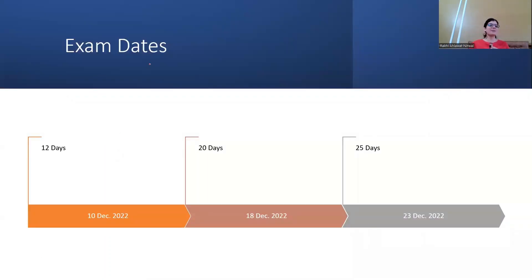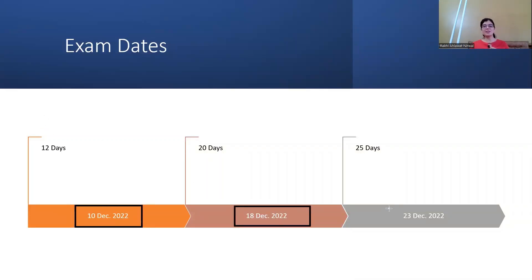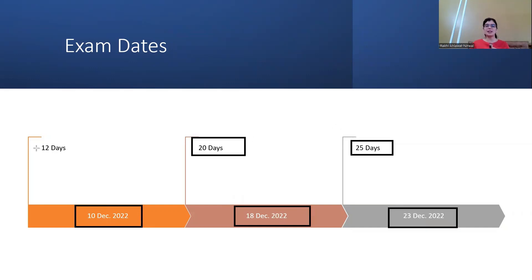The SNAP exam dates are 10th December, 18th December, and 23rd December. Students with the 10th December date have only 12 days. Those with 18th December have 20 days, and those with 23rd December have 25 days remaining to prepare.